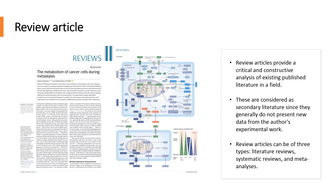Review articles provide a critical and constructive analysis of existing published literature in a field through summary, analysis, and comparison, often identifying specific gaps or problems and providing recommendations for future research. These are considered secondary literature since they generally do not present new data from the author's experimental work. Review articles can be of three types: literature reviews, systematic reviews, and meta-analyses. Review articles can be of varying lengths depending upon the journal and subject area.